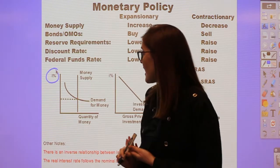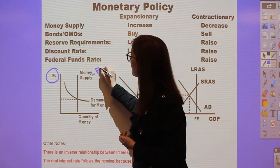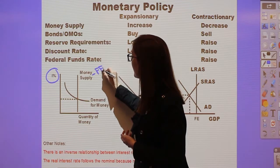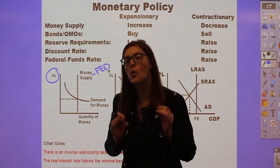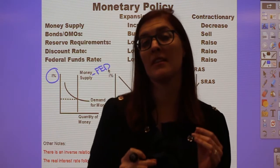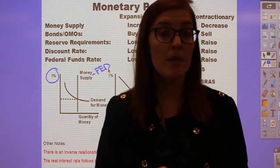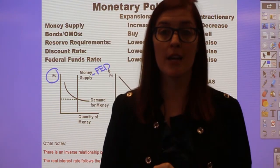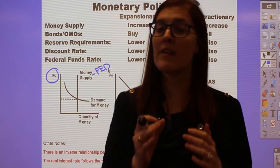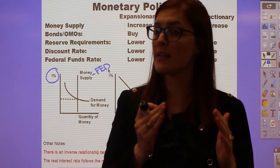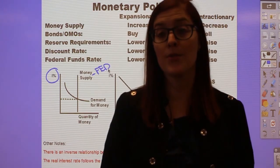Since the Fed has a complete monopoly control over the money supply, that is the only thing that can move the money supply line. The government can't move it, people can't move it — only the Federal Reserve. So whatever they do directly moves the money supply to the right or to the left.